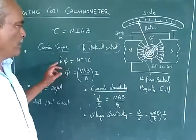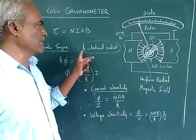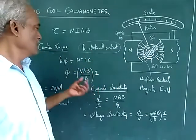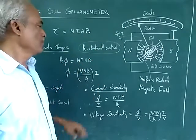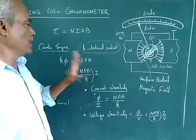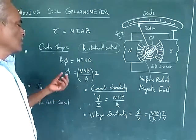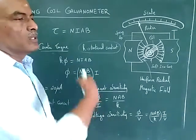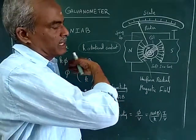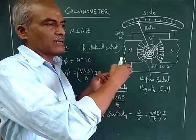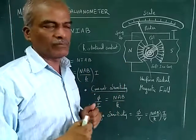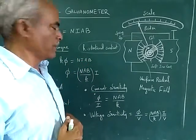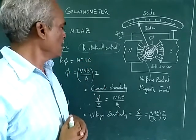The needle moves from zero when there is no current and must not jitter, so a counter torque is applied to balance it. The counter torque is kφ, which equals NIAB, where k is the torsional constant. So the deflection angle φ equals (NAB / k) × I. This is the fundamental equation of the moving coil galvanometer.